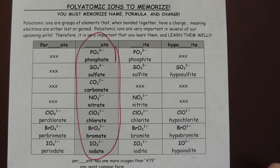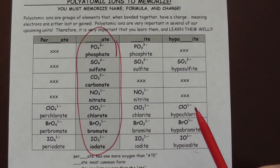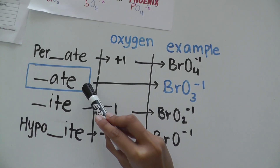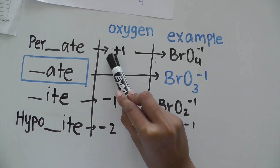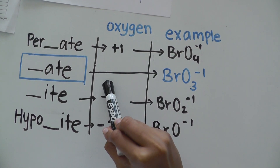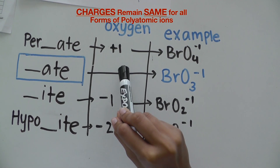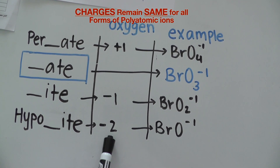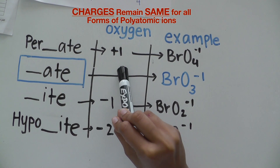Next, I'm going to show you how to memorize per-ate, -ite, and hypo-ite. Now we've found the -ate form. To find per-ate, it is just 1 oxygen more than -ate. To find -ite, it is 1 oxygen less than -ate. And to find hypo-ite, it is 2 oxygens less than -ate.